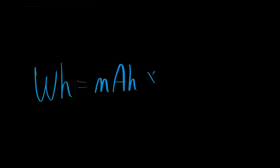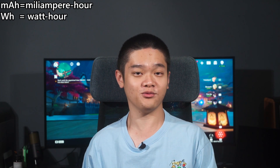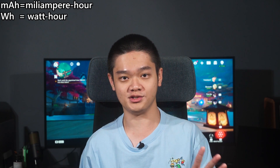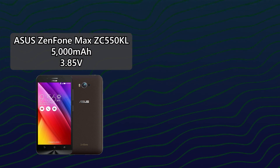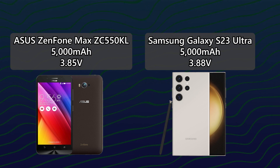If we want to know a battery's true capacity, we also need to know the voltage. Once we incorporate the mAh value with the battery's voltage, we get watt-hours. It's basic multiplication between those two numbers — and by multiplying by 1,000 to cancel out the 'milli' prefix — we get the watt-hour number. We cannot assume all batteries supply the same voltage, even for phones.